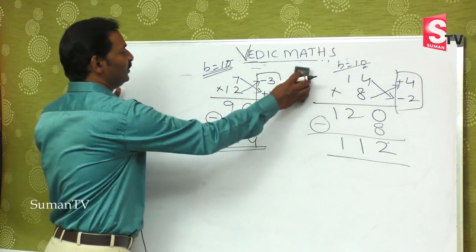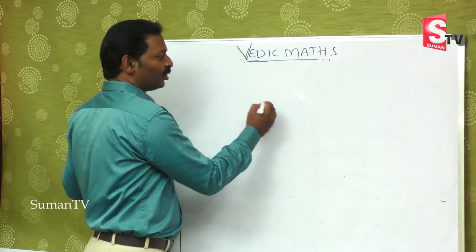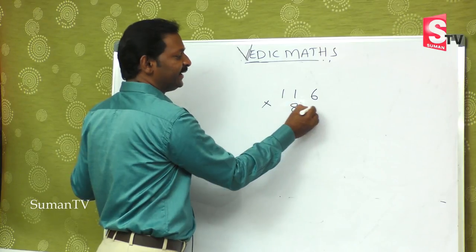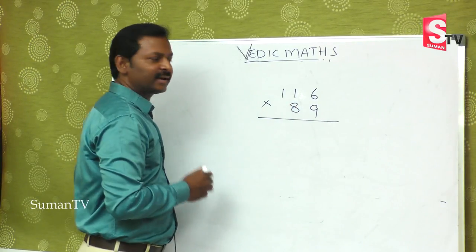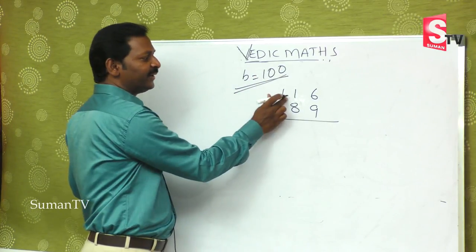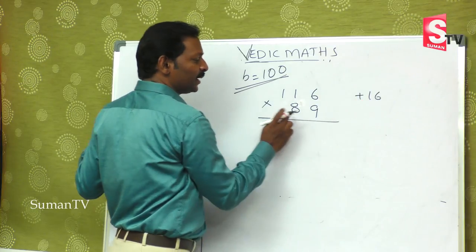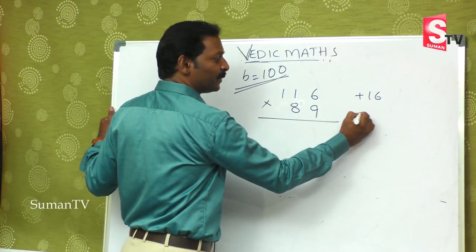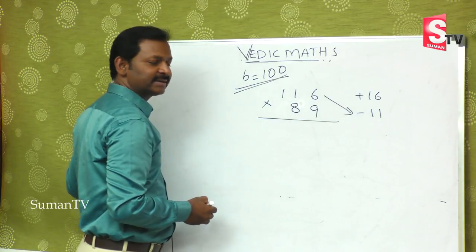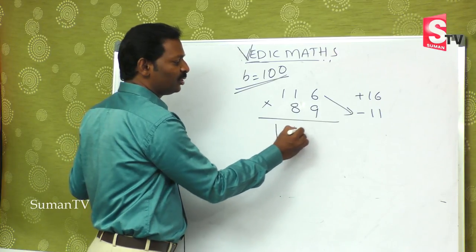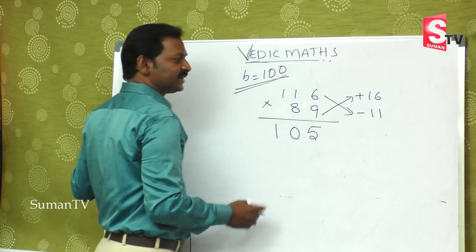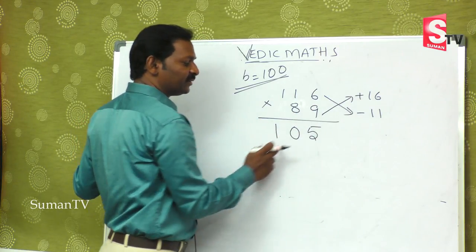Now we will see double digit numbers. Suppose 116 is multiplied by 89. The base is 100. 116 is 16 more than 100, so plus 16. 89 is 11 less than 100, so minus 11. According to our method, 116 minus 11 equals 105, or 89 plus 16 equals 105.